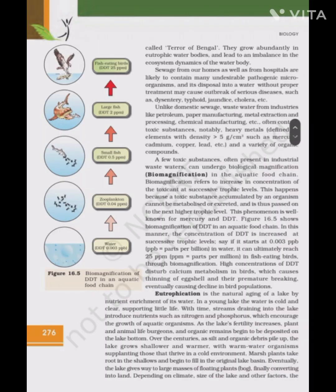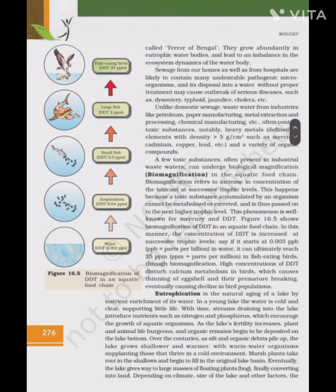Sewage from homes and hospitals is likely to contain many undesirable pathogenic microorganisms, and its disposal into water without proper treatment may cause outbreak of serious diseases such as dysentery, typhoid, jaundice, cholera, etc. Unlike domestic sewage, wastewater from industries like petroleum, paper manufacturing, metal extraction and processing, chemical manufacturing, etc. often contain toxic substances, notably heavy metals — defined as elements with density greater than 5 g/cm³ — such as mercury, cadmium, copper, lead, etc. — and a variety of organic compounds.